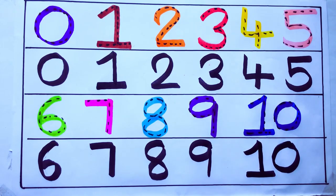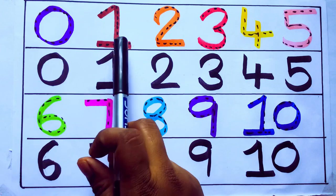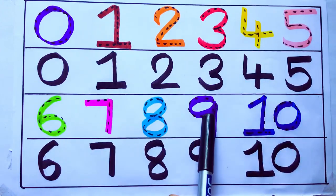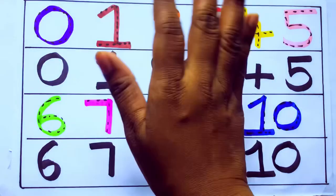Once again learning numbers. 0, 1, 2, 3, 4, 5, 6, 7, 8, 9, 10. Okay. Bye kids, bye.